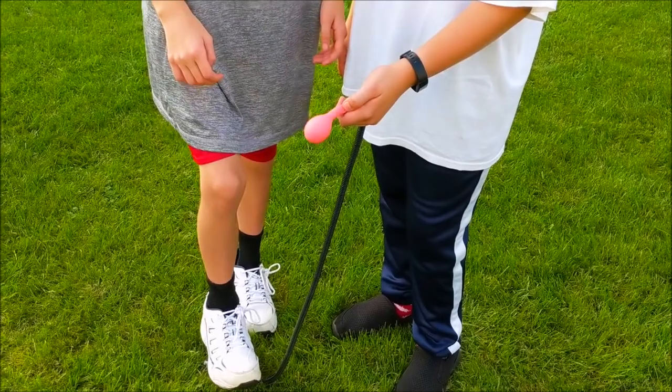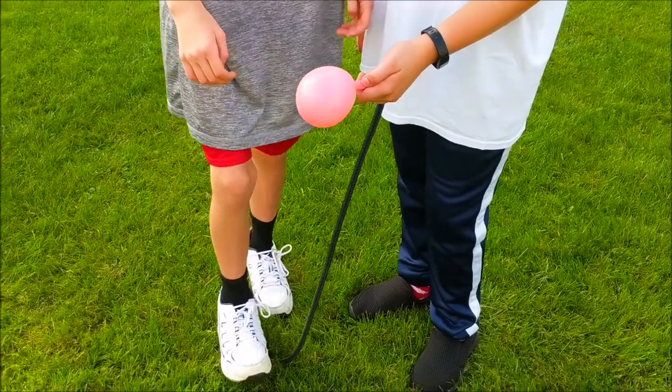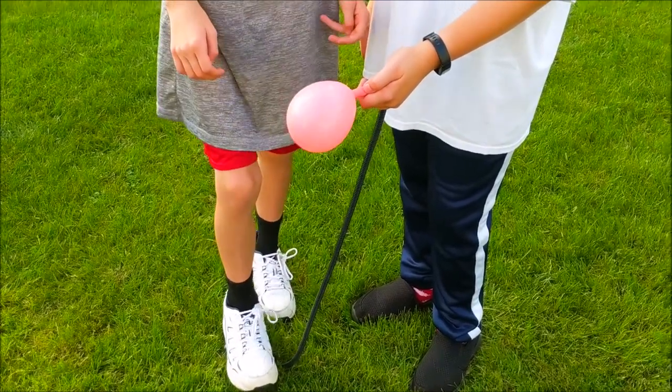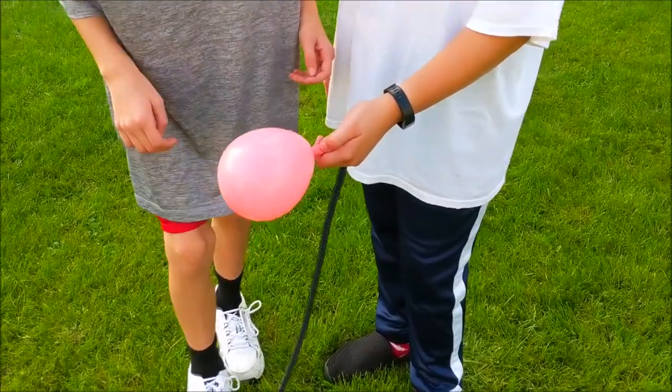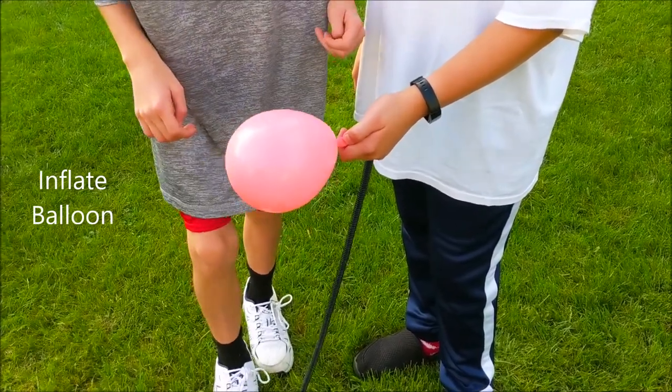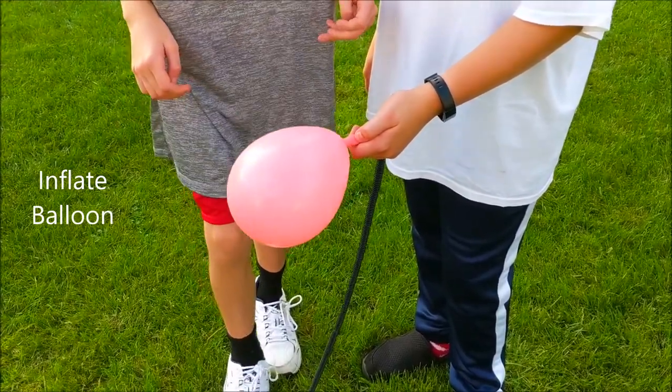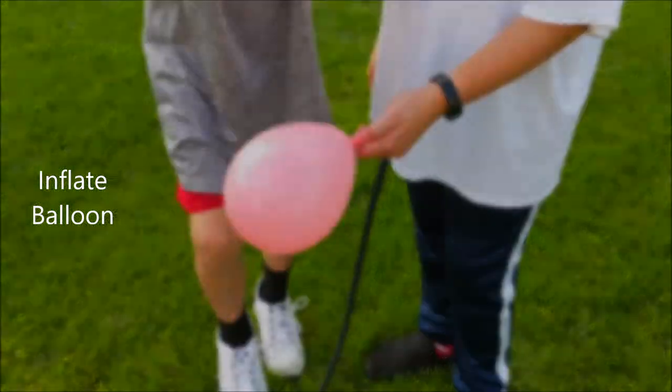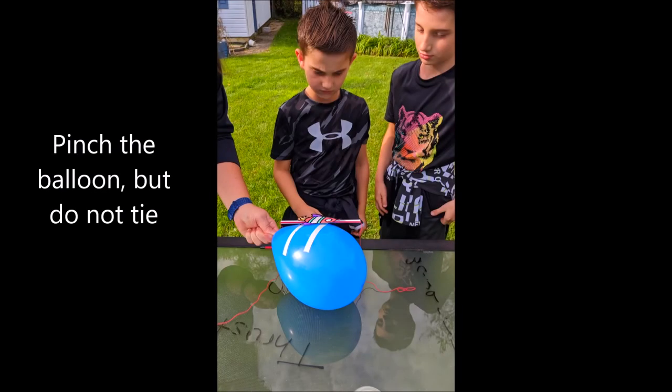It will be good for you to have a helper as the next few steps get tricky to fully assemble your rocket. Inflate your balloon with the air pump. Make sure you count the number of pumps you want. Once the balloon is inflated to where you want it, have your helper pinch the balloon tightly closed but do not tie it.